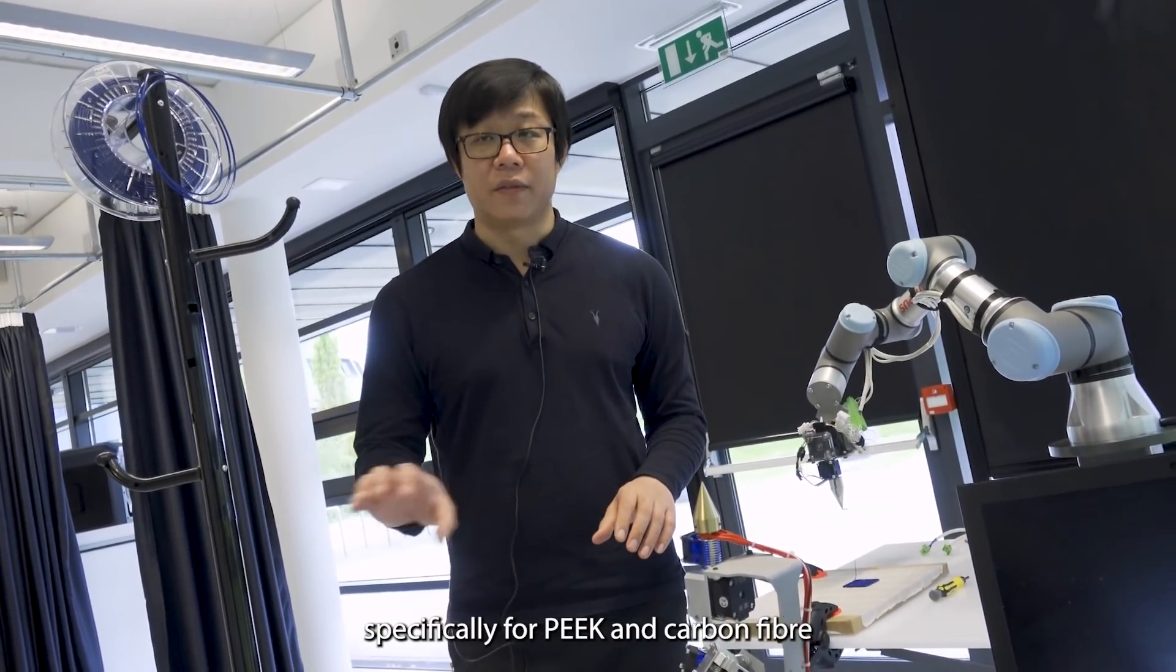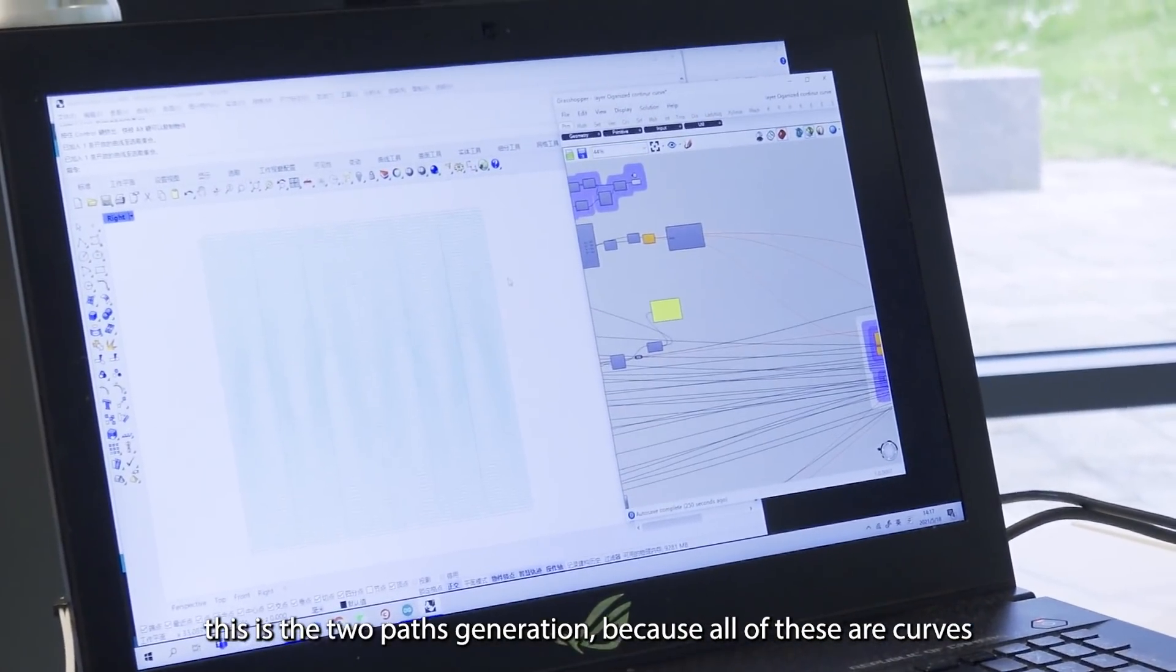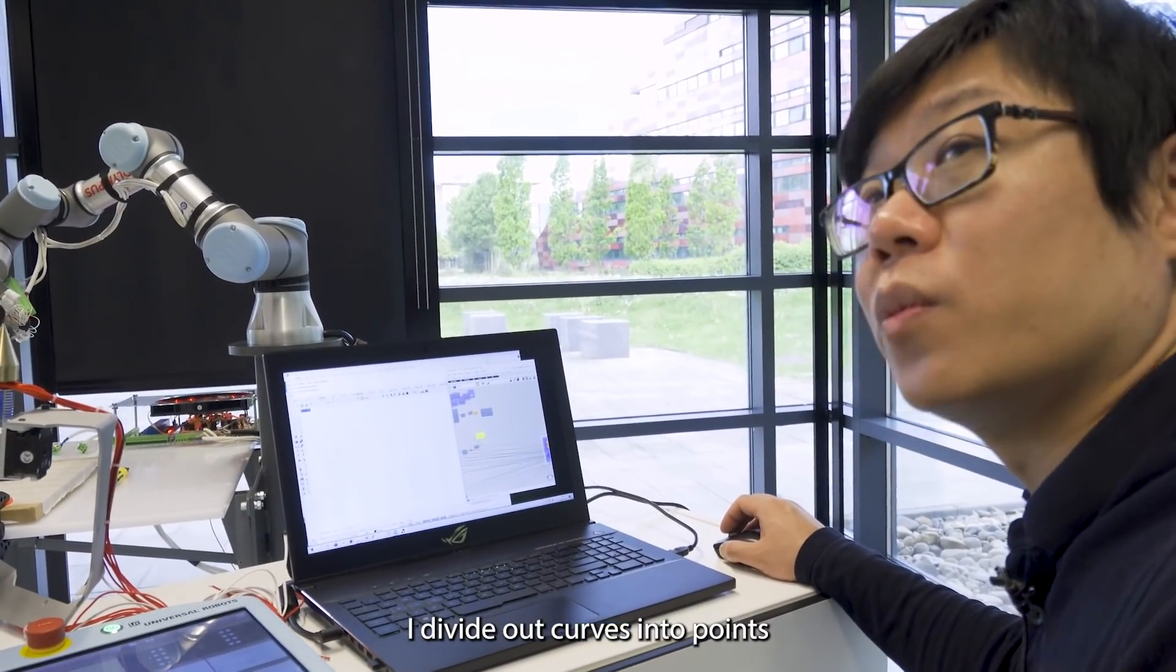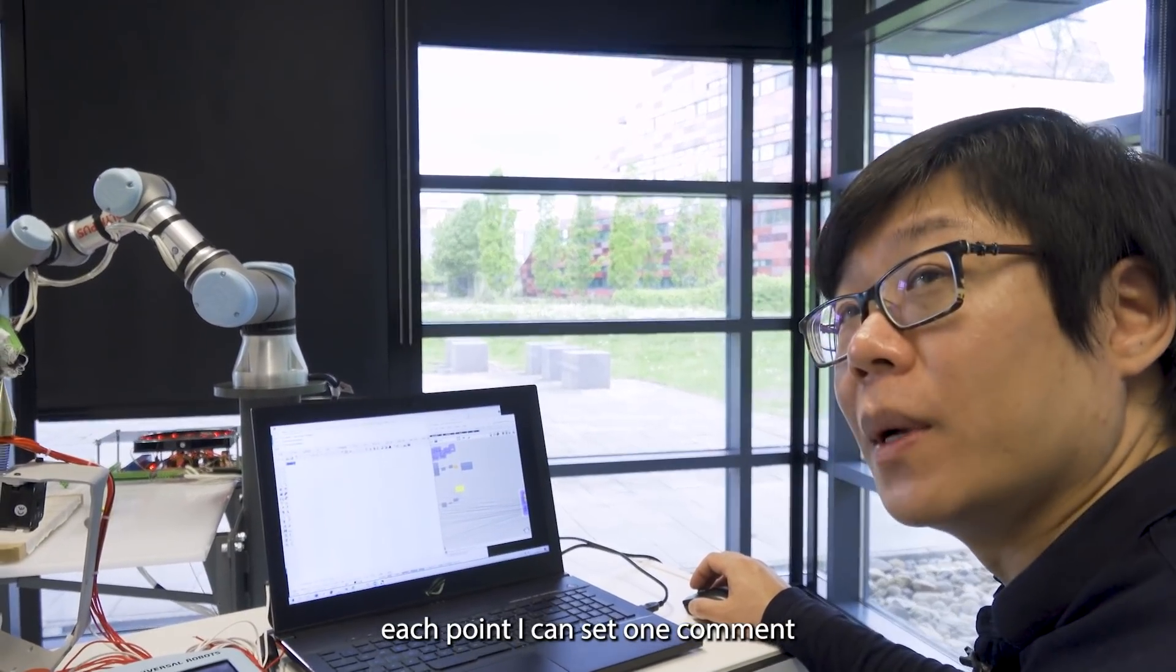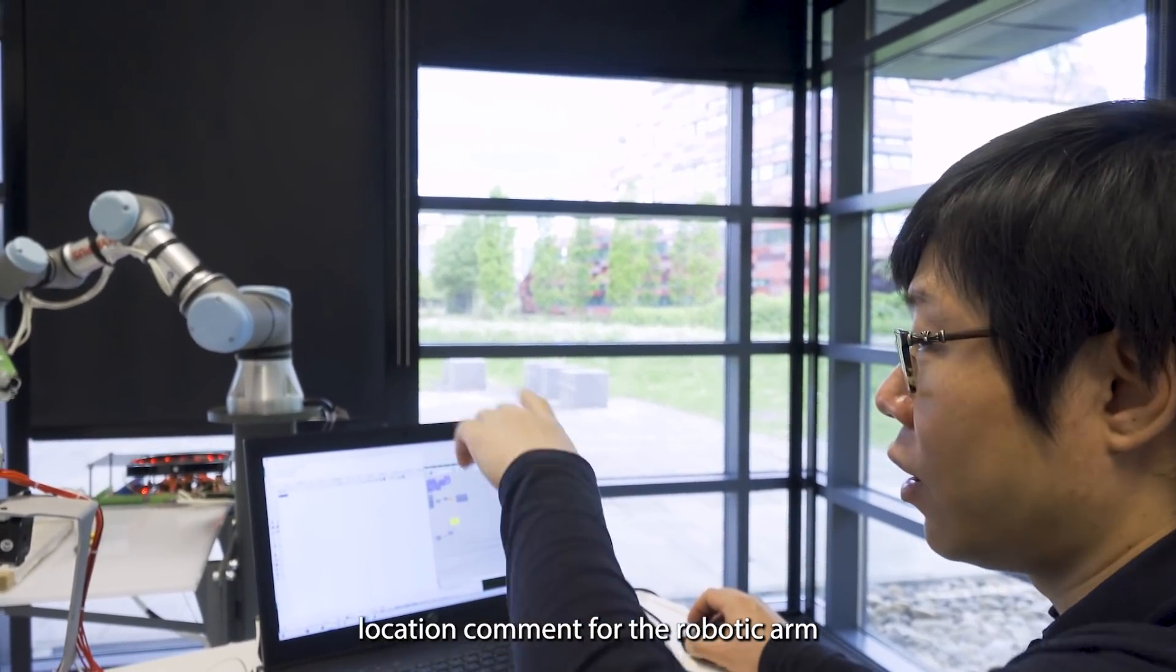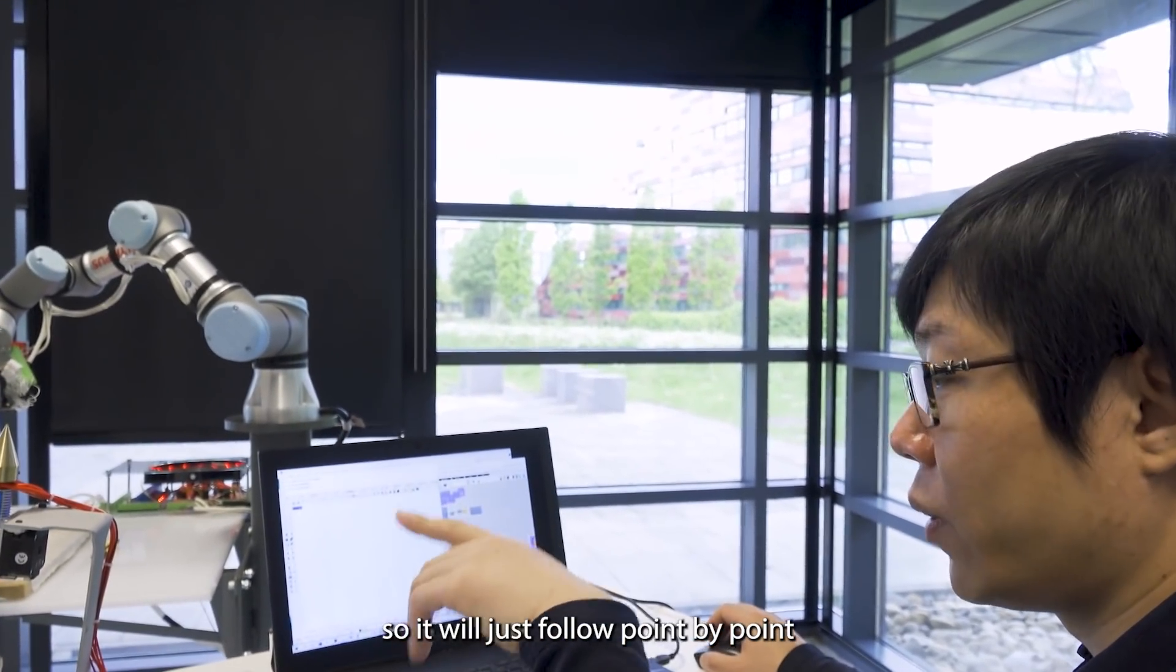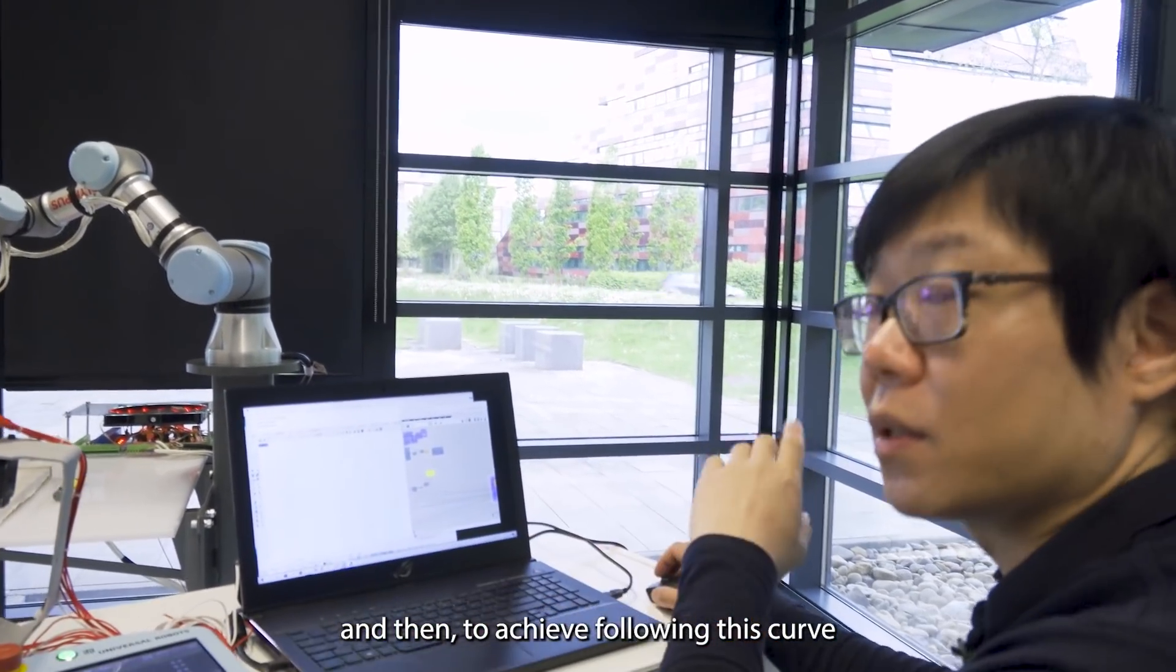This is a two-part generation. Because all those are curves, I divide all the curves into points. Each point, I can set one command location for the robotic arm. So it will just follow point by point, and then to achieve following this curve.